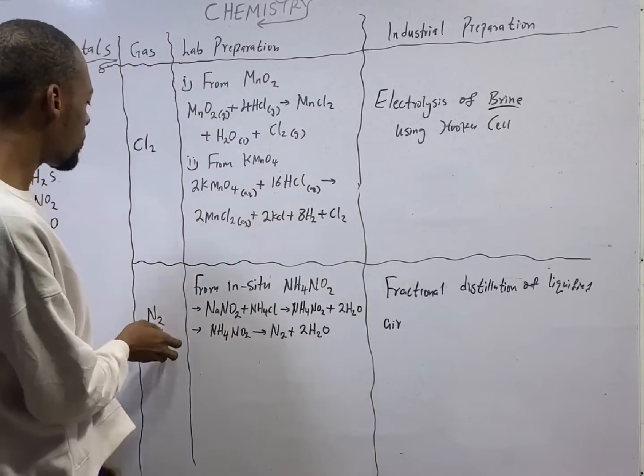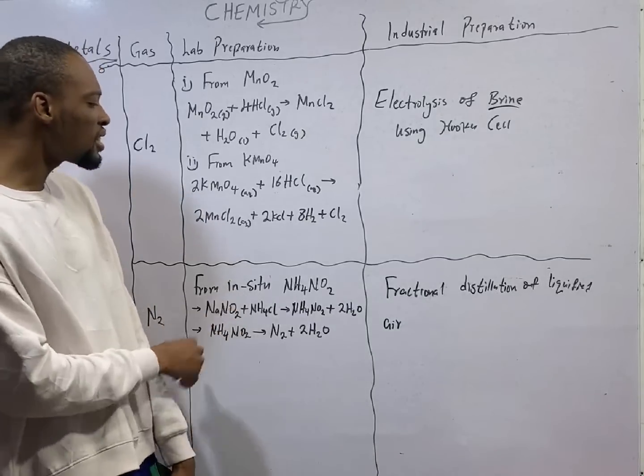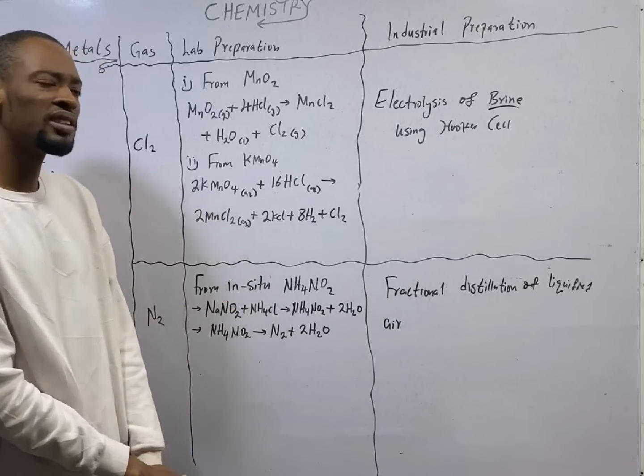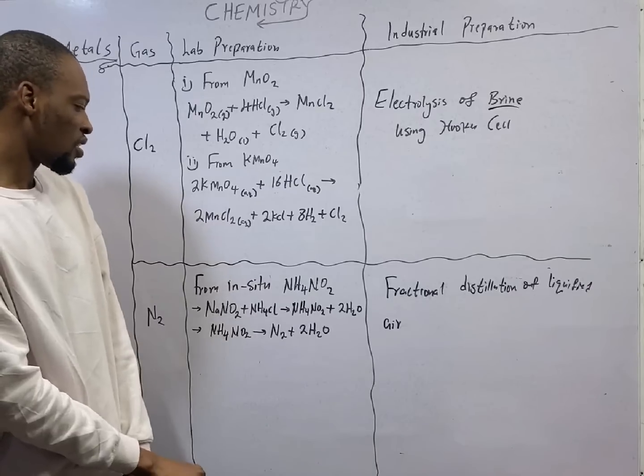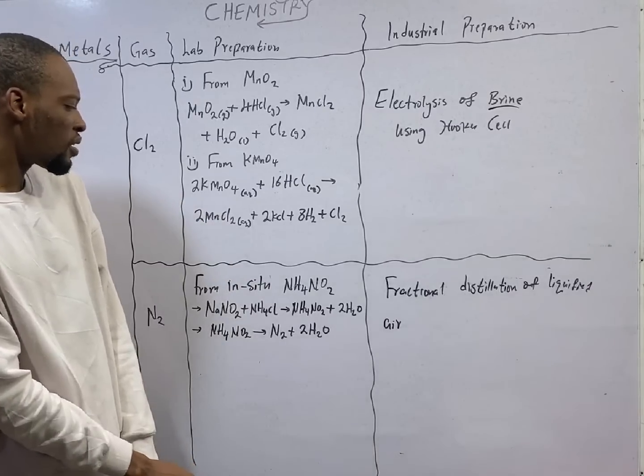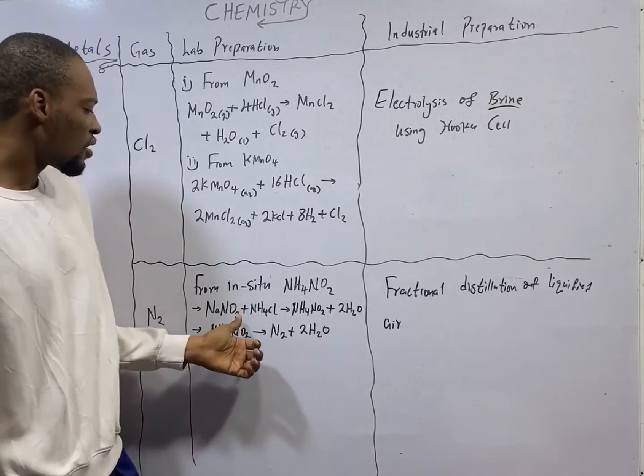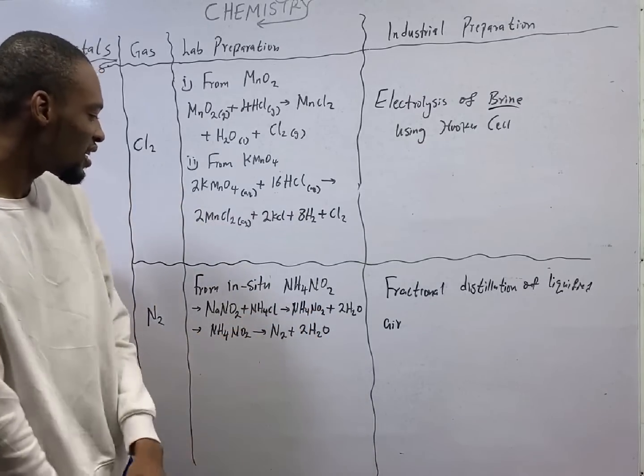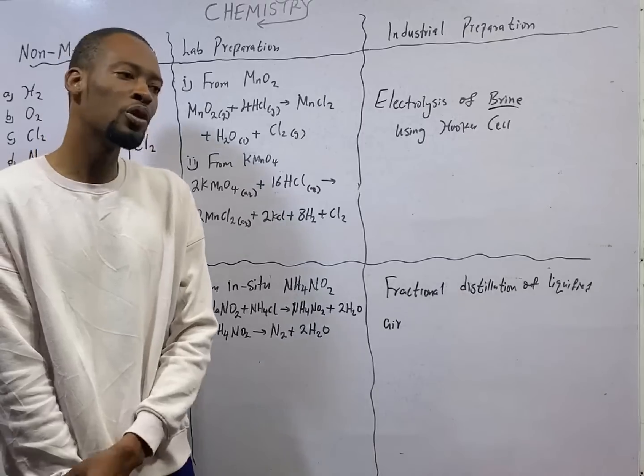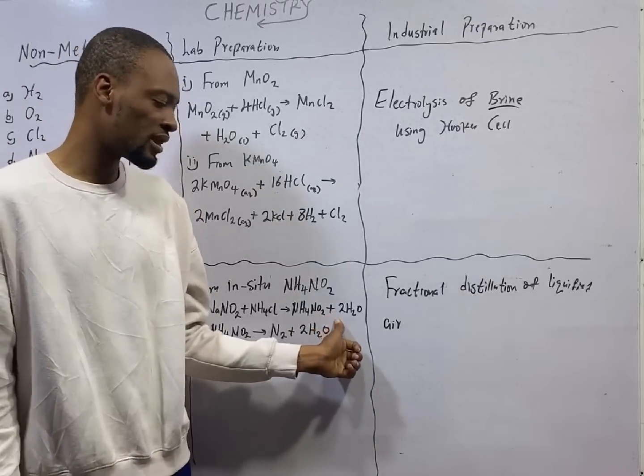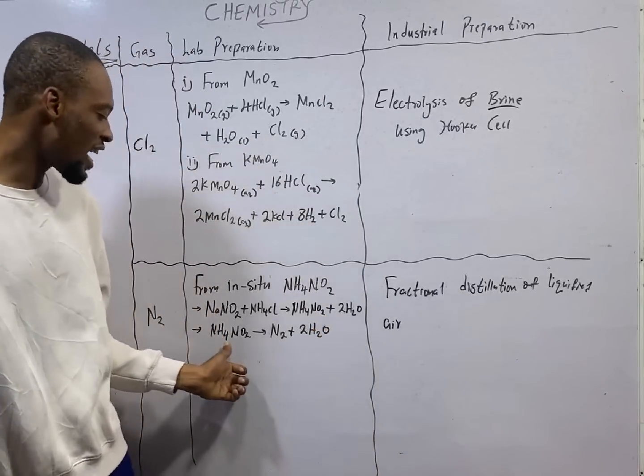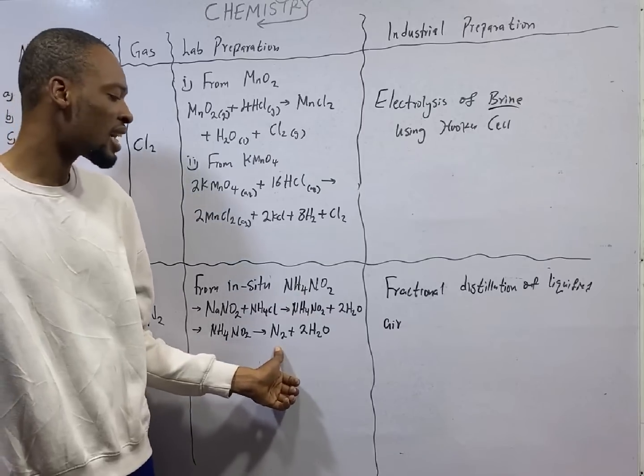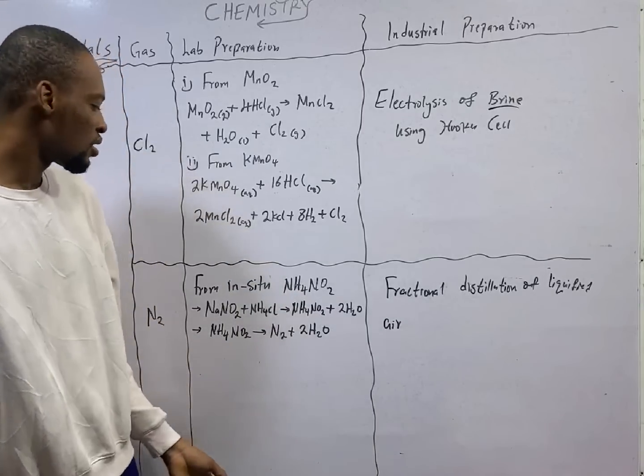To prepare nitrogen gas, one, we use in-situ ammonium diazol nitrate. The first reaction is formation of ammonium diazol nitrate. When you react NaNO2 with ammonium chloride, you will form ammonium diazol nitrate. And when this guy splits, it will form nitrogen gas and water.